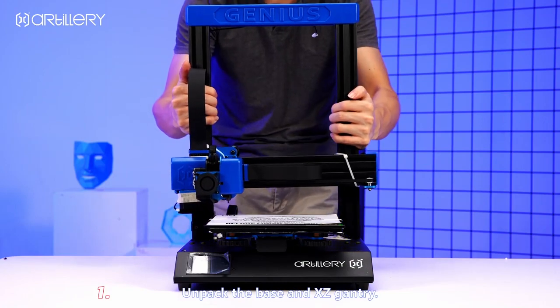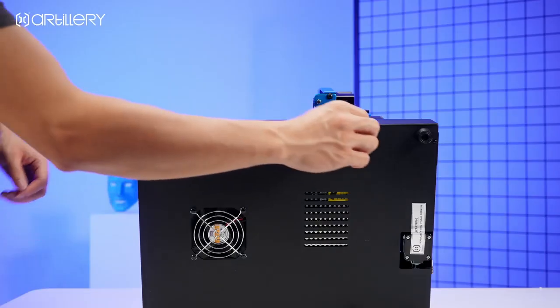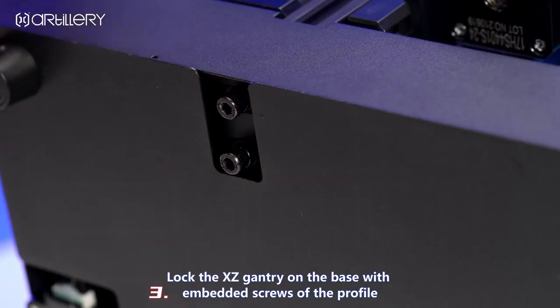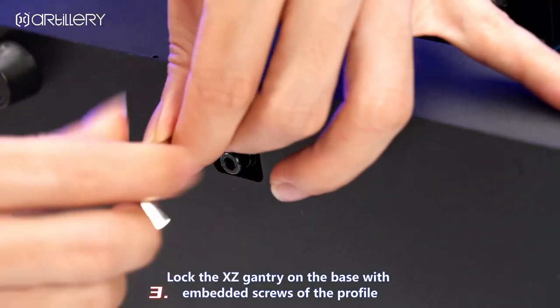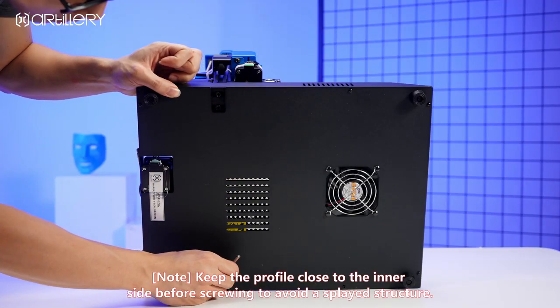Unpack the base and gantry, the entry, and feed the axis. Feed the entry into the slot on the base so that the flexible flat cable pins are perfectly inserted into the slot. Lock the entry on the base with the embedded screws on the profile.